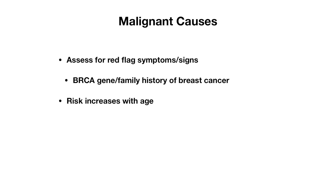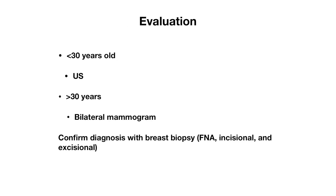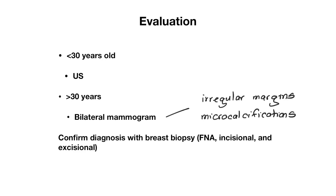When it comes to malignant causes, there aren't many high yield characteristics to differentiate the specific disease processes unless you're taking Step 1 and need to know the underlying histology. You need to identify red flag symptoms such as BRCA gene carrier status or family history of breast cancer. Risk also increases with age, so watch for post-menopausal patients or those nearing menopause. Age is an important factor in evaluating breast lesions: women under 30 usually require just an ultrasound, while women over 30 need a bilateral mammogram. Malignant features include irregular margins and microcalcifications, which appear as white speckles on a mammogram.